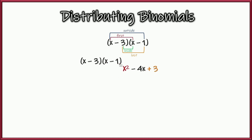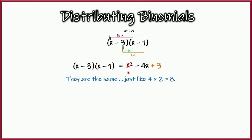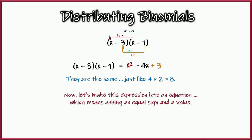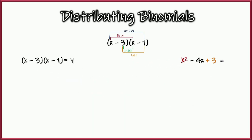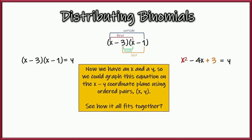Because we multiplied x minus 3 times x minus 1 and got x squared minus 4x plus 3, these two things are exactly the same — just like 4 times 2 equals 8. They look different but have the same value. So when we factor something like x squared minus 4x plus 3, we're doing distributing backwards. These two things are equal. Now, if we make it an equation by setting it equal to y, we have an x and a y, and we can graph that on an xy coordinate plane using ordered pairs.